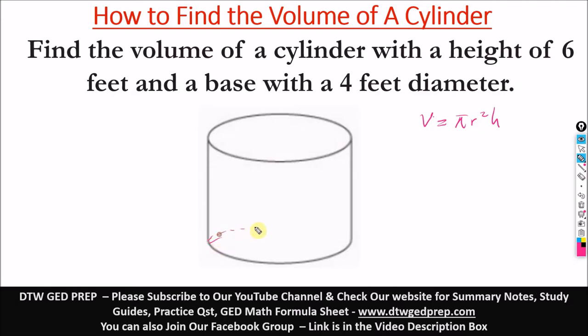A cylinder has two bases. This top circle here is a base, while the lower one also is a base. So you have two bases. A cylinder is like a tin, maybe a tin tomato and all that. So that's a cylinder shape.